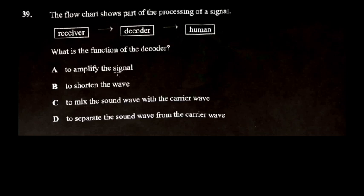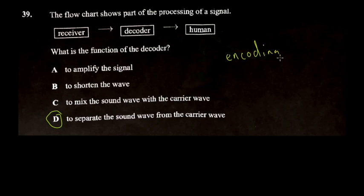The best answer here would be: to separate the sound wave from the carrier wave, because the sound wave is what you want — it's the signal intelligible to the human. To mix the sound wave with the carrier wave is called encoding, meaning we are putting the information into some form of code. That's one reason why it's hard to intercept certain communication lines — like WhatsApp, the message is encoded first and has to be decoded at the other end.